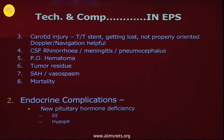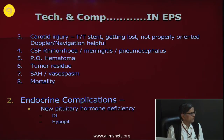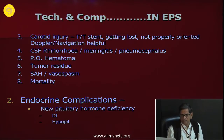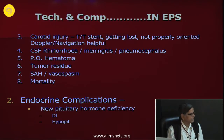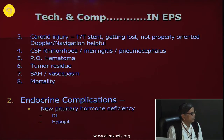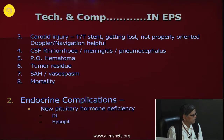Navigation and Doppler may help identify these arteries. CSF rhinorrhea can give rise to meningitis or pneumocephalus. Post-operative hematoma in the residual tumor or pituitary apoplexy may also occur. There may be subarachnoid hemorrhage — blood entering into the arachnoid — which may cause cerebral vasospasm and mortality. Meningitis, subarachnoid hemorrhage, residual tumor hematoma, and carotid injuries can kill a patient if you are not very careful.